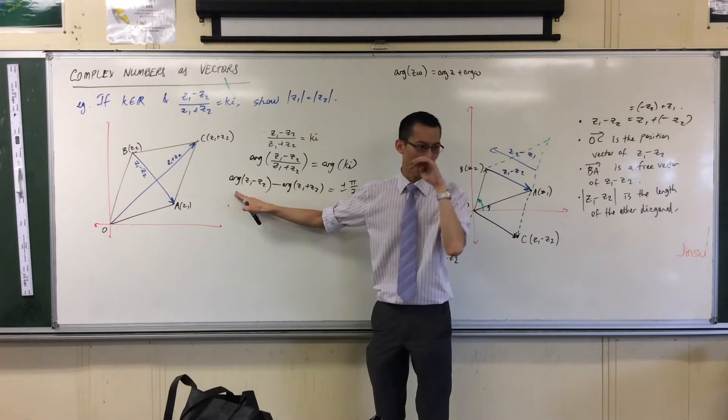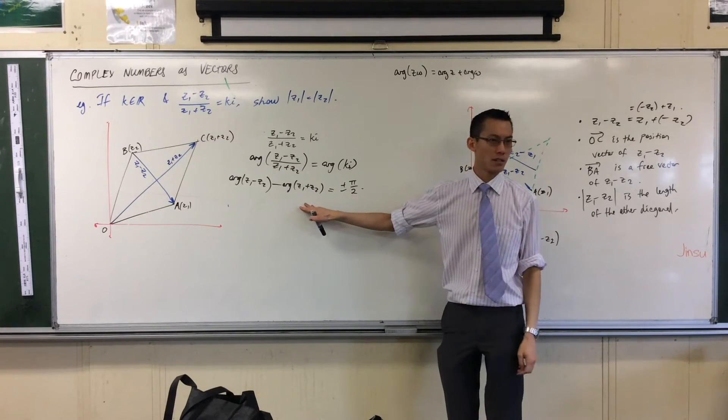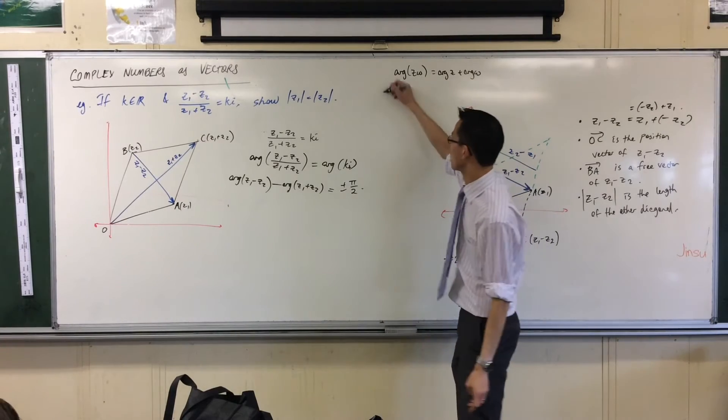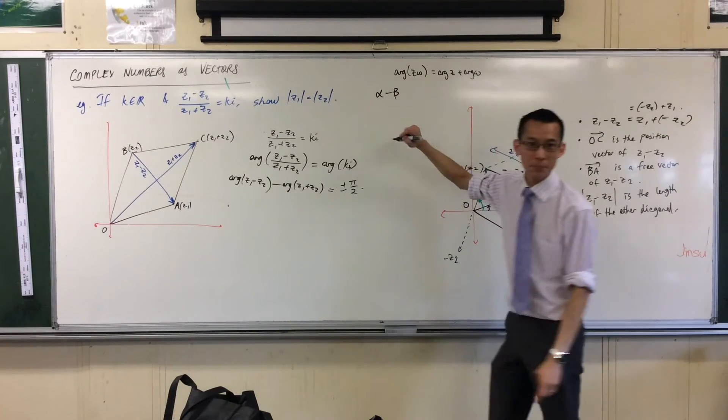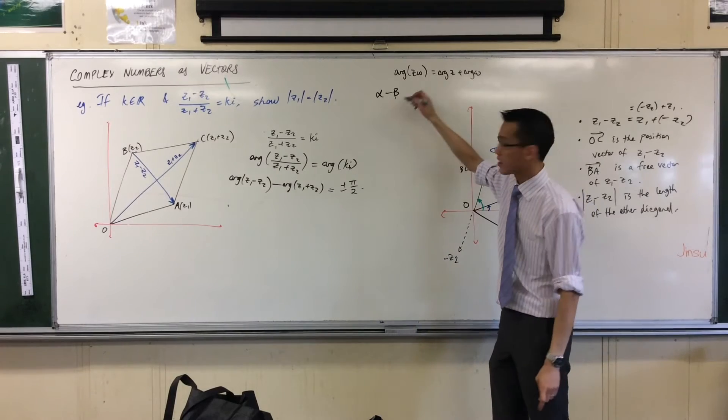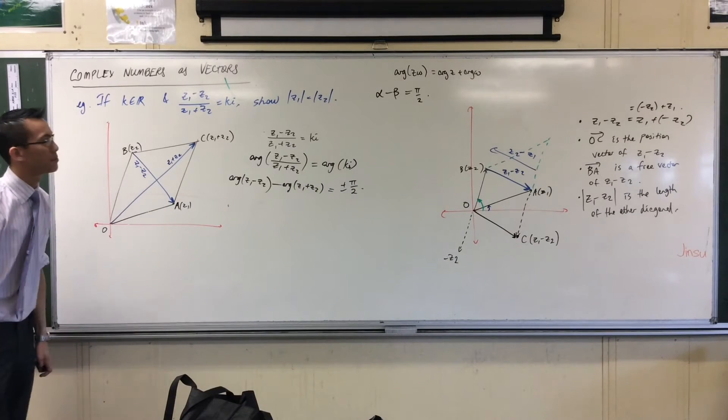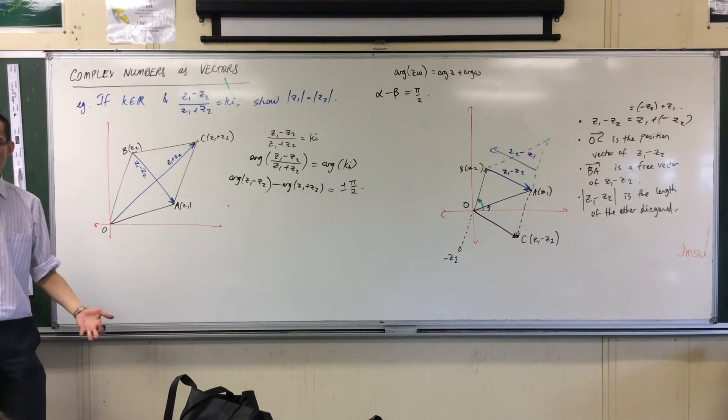Now hold on a second. Remember this is just an angle and this is just some other angle. So if I say I have two angles, let's just call them alpha and beta, and when you subtract them you get like pi on two, what does that mean about the two angles?